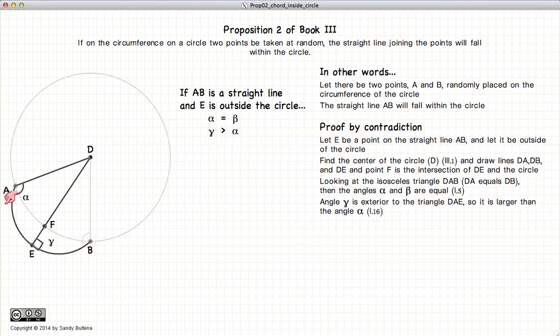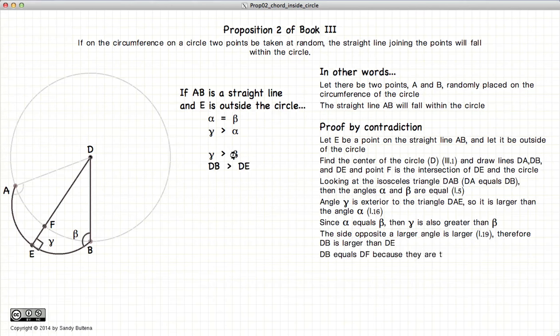Now again, we're pretending that AEB is a straight line. So we have gamma is larger than alpha. Now since alpha is equal to beta, that also means that gamma is larger than beta.